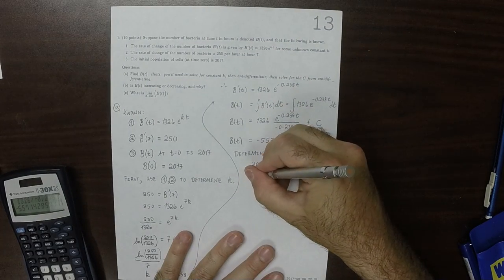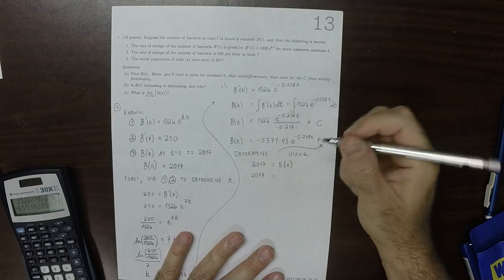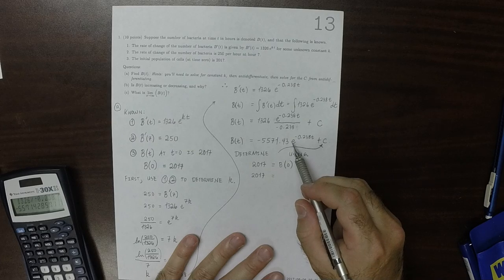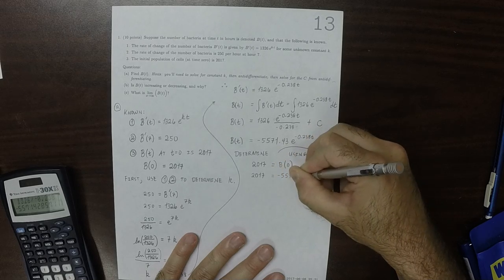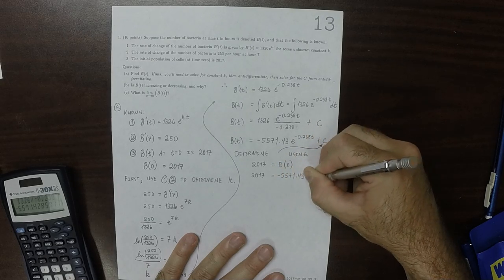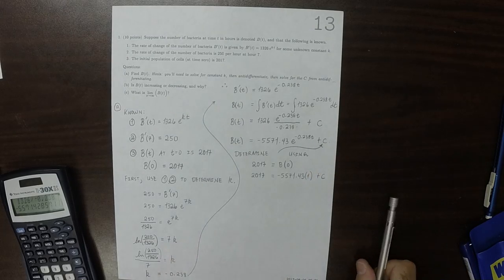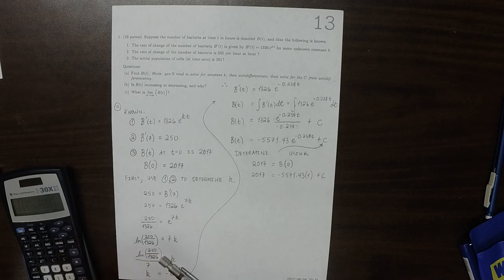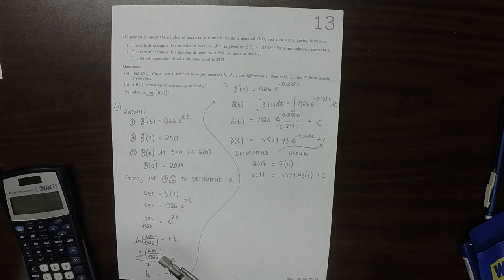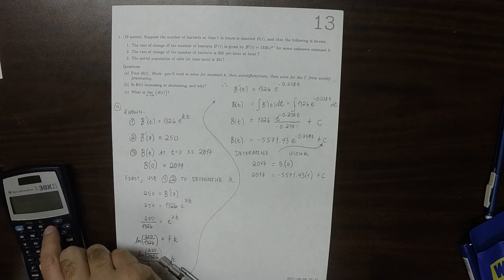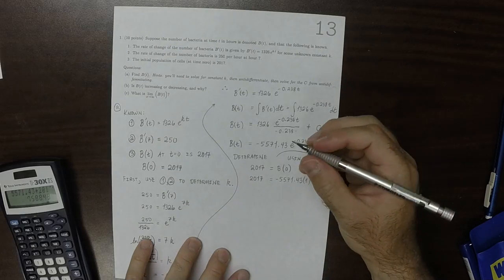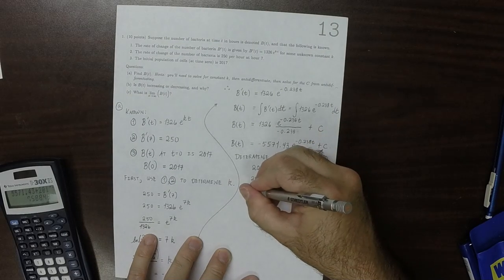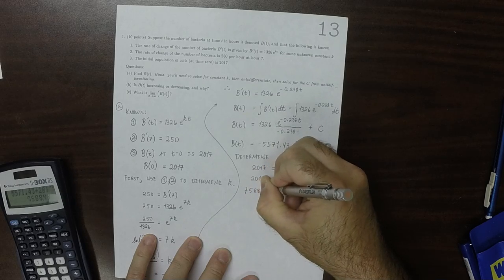So 2017, plug in 0 there. Well, exponential of 0 is 1, so that's just negative 5,571.43 times 1 and then plus c. So we can add that number to both sides, so negative 5,571.43, and then we're going to add that to 2017, so that is 7,588.43 is c.